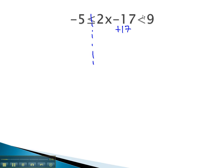As we do so, we must balance on all three parts of this inequality, meaning we add 17 on the right, and we'll add the 17 on the left. We now have 12 is less than or equal to 2x, which is less than 26.